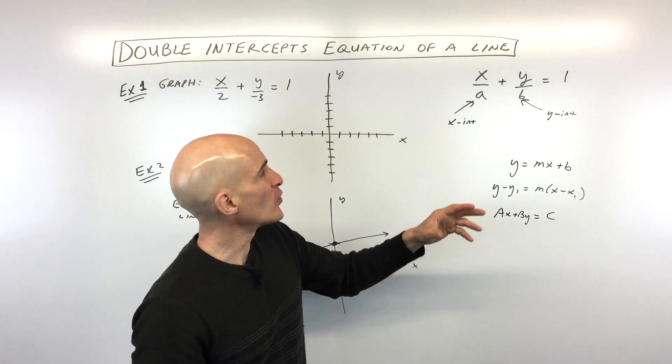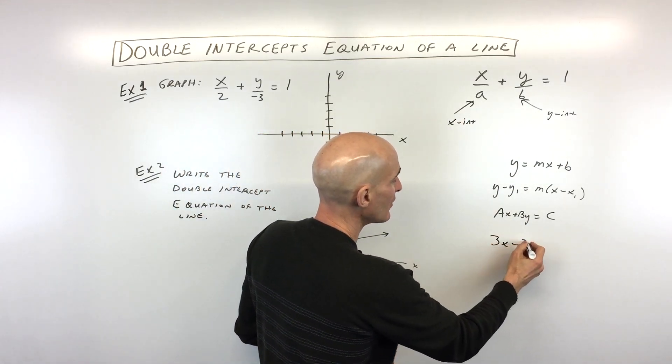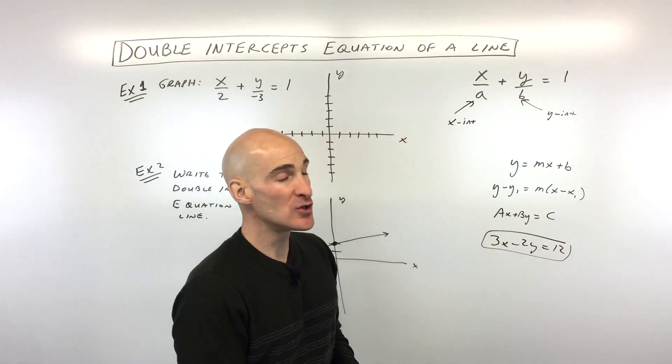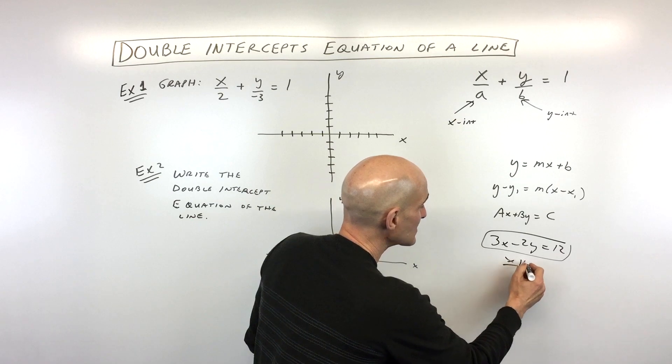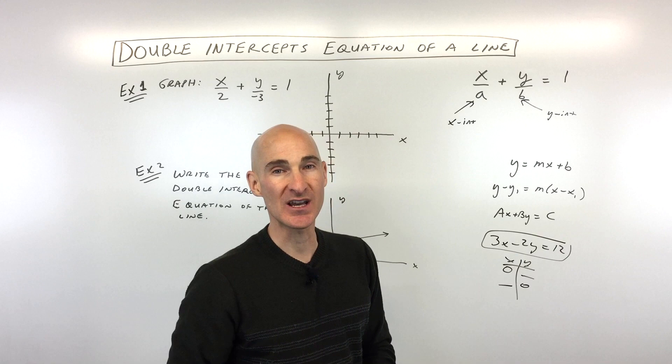I want to explain something really quick. Say, for example, when you find the x and y-intercept of an equation of a line that's in this form, let's say the standard form like this, what we do is we set x to 0 to find the y-intercept and we set y to 0 to find the x-intercept.